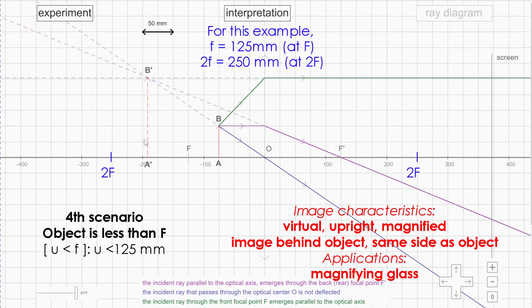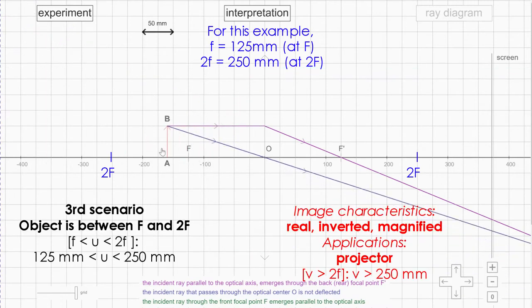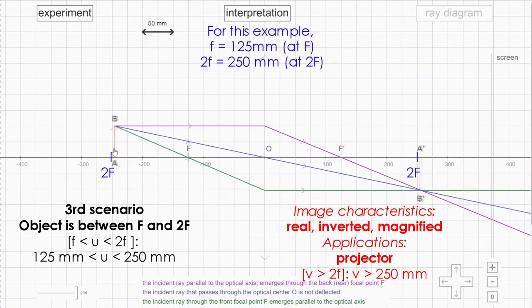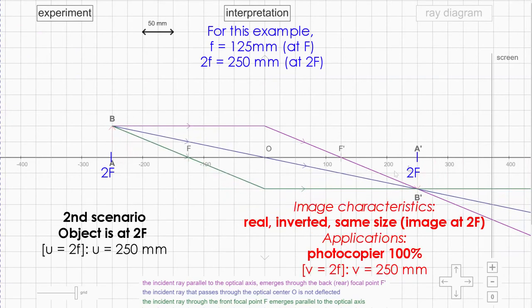If it's between f and 2f, you get a real, inverted, magnified image. And when it's exactly at 2f, very important, the image must be at 2f, real, inverted, but now it's same size.